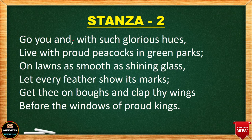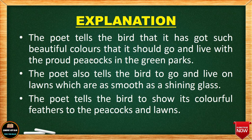Stanza Two: 'Go you and with such glorious hues live with proud peacocks in green parks, on lawns as smooth as shining glass, let every feather show its mark, get thee on boughs and clap thy wings before the windows of proud kings.' Here the poet is directly telling the Kingfisher bird — 'Go, you have such beautiful colors, go and live with the proud peacocks in green parks.'